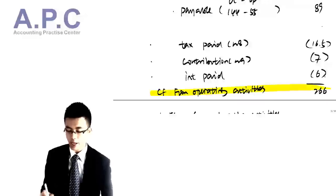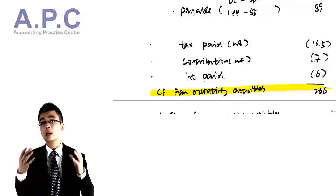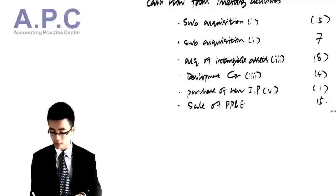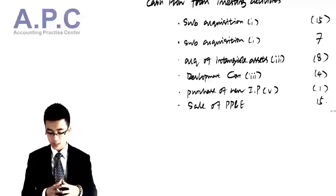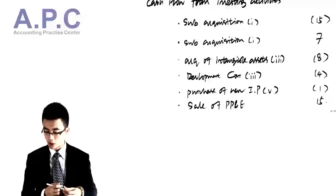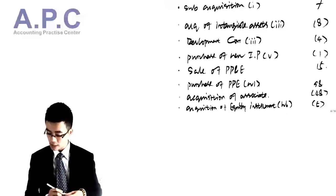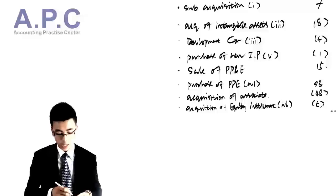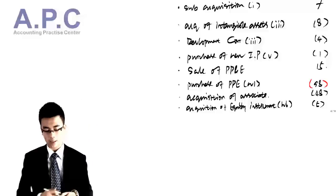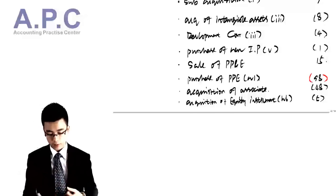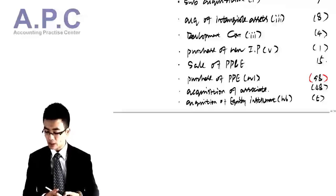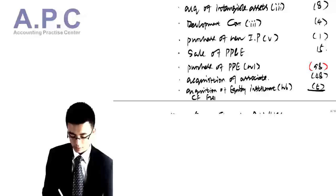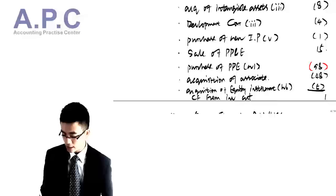In the exam, don't try to write the total sentence for operating activities because you're getting no marks for that — it would be impossible to get all figures right. Cash flow from investing activities: sub-acquisition cash paid: minus 15; sub-acquisition cash acquired: 7; acquisition of intangible assets: minus 8; development costs: minus 4; purchase of new investment property: minus 1; sale of PPE: 15; purchase of PPE: minus 98; acquisition of associates: minus 48; acquisition of equity instruments: minus 5. Net cash flow from investing activities: minus 157.